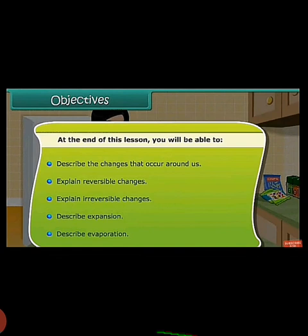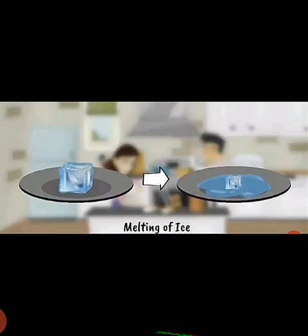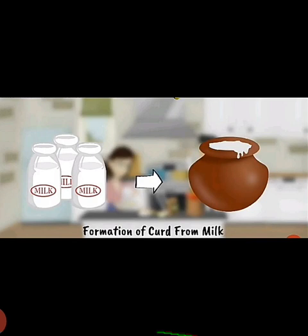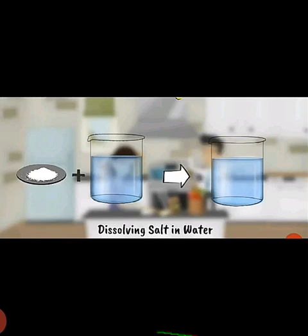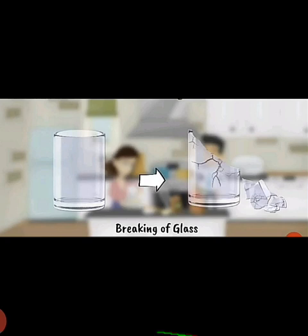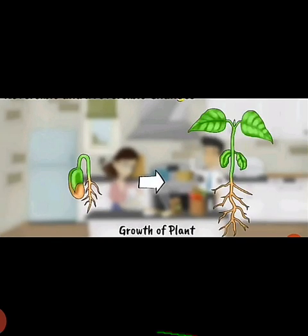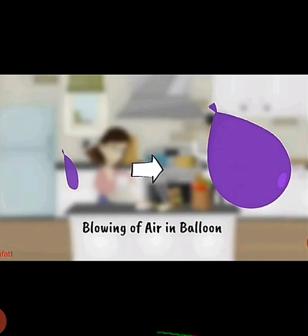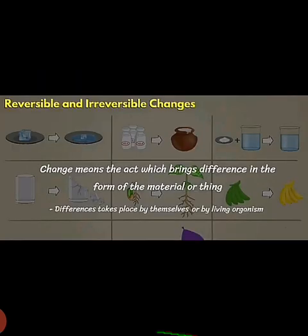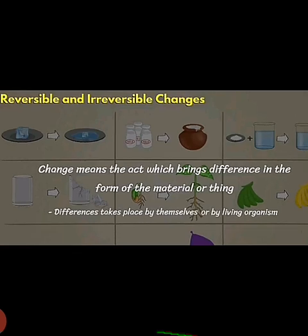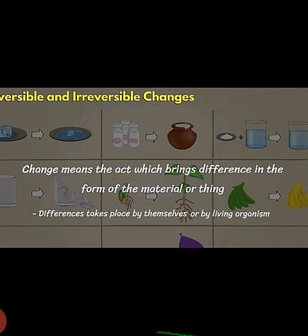Here is a plate with an ice cube, and another plate showing the melting of ice. Next, the formation of curd from milk is shown. Then sugar or salt dissolved in water giving a clear solution, breaking of a glass, growth of a plant from a seed, ripening of fruits, and blowing of air in a balloon — all these are different types of changes.